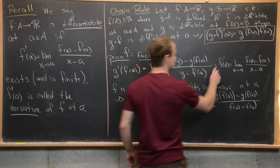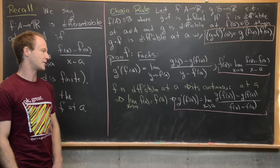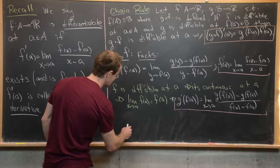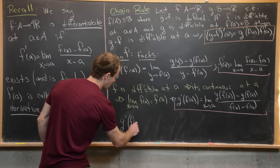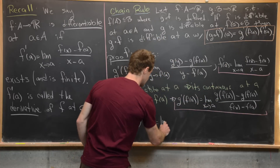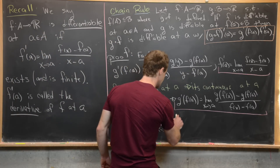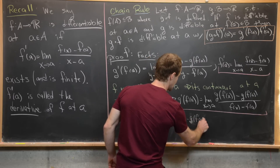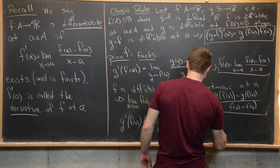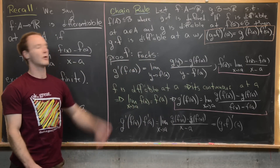Using that continuity, we can rewrite g'(f(a)) via a compositional limit formula as the limit as x→a of [g(f(x)) minus g(f(a))] over [f(x) minus f(a)]. Then, multiplying this together with the limit expression for f'(a), the algebraic properties of limits let us combine them into a single limit. The [f(x) minus f(a)] cancels, leaving [g(f(x)) minus g(f(a))] over [x minus a], which is exactly (g∘f)'(a) — proving the chain rule.